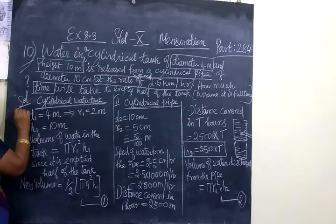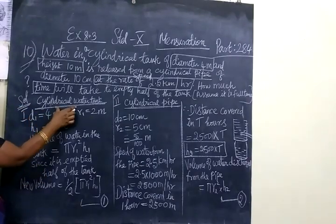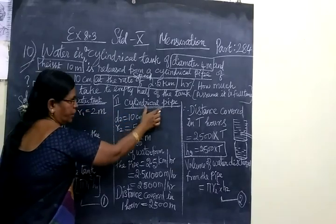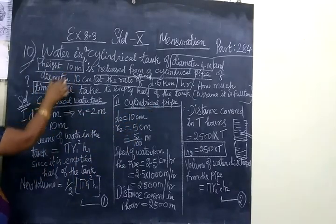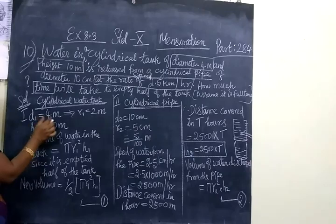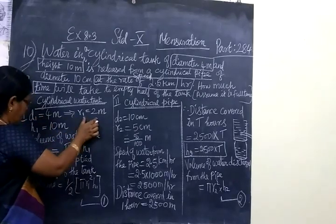Now for the solution, first of all, cylindrical water tank and cylindrical pipe. Cylindrical water tank, diameter and height. Diameter is 4 meters, radius is 2 meters, height is 10 meters.